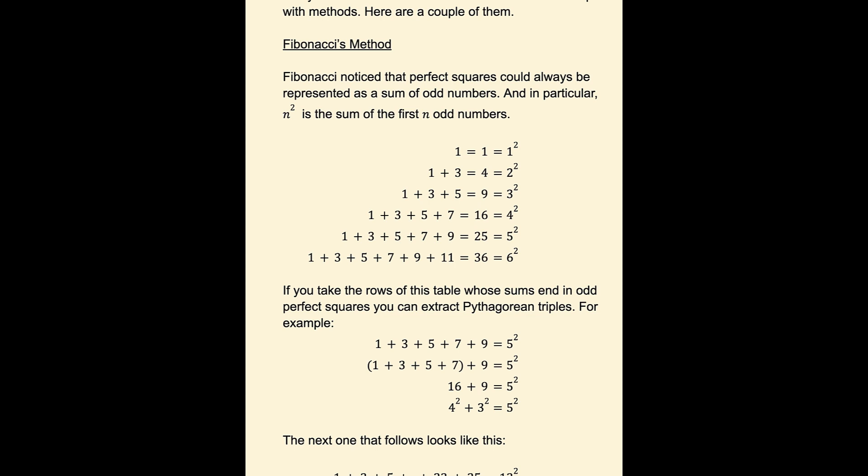So for instance, in the middle of the set of equations below, we can see that 4 squared is just the sum of the first four odd numbers, 1, 3, 5, and 7.